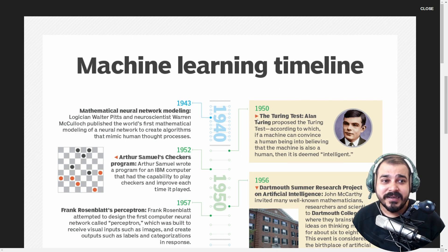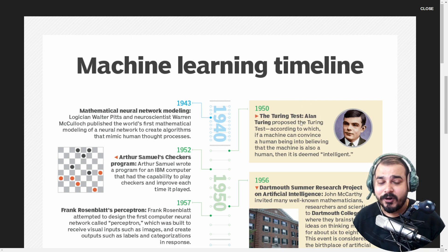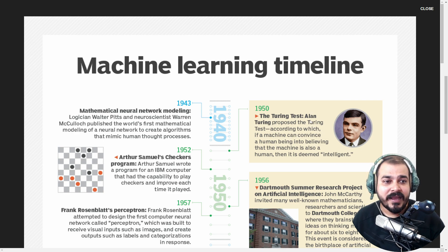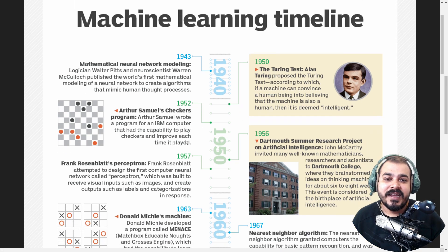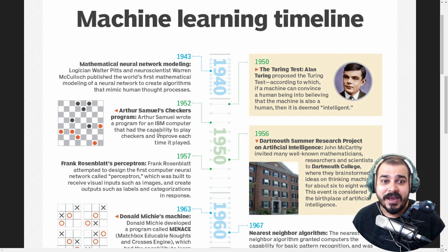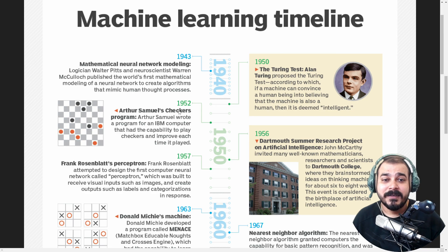About the 1950s timeline, I knew about the Turing Test. The main aim of the Turing Test by Alan Turing was: if a machine can convince a human being that a machine is also a human, then it passes the test. I also knew about Arthur Samuel's Checkers program. Arthur Samuel wrote a program for an IBM computer that had the capability to play checkers and improve each time it played — somewhere in 1952.